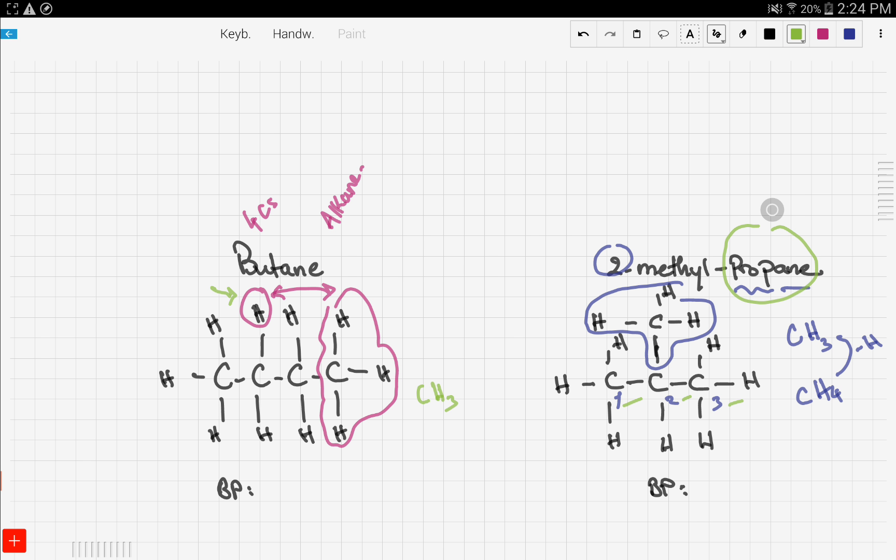So, it's propane plus something else, which is the methyl group here, which we said it's a CH3. Now, this CH3, the methyl group, is located on the second carbon. That's why we say 2-methyl propane, or you can say dimethyl propane.